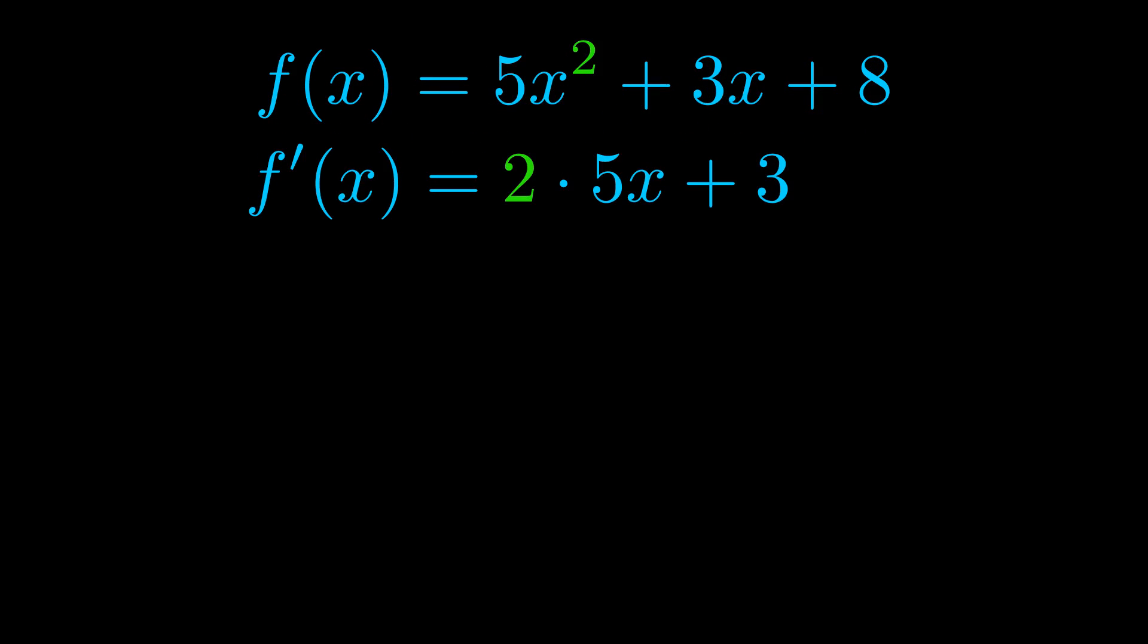The derivative of just the simple x term will become the coefficient on the x, and the constant term will disappear when taking the derivative. We then simplify this expression by multiplying anything that needs to be multiplied and we come out with our final answer.